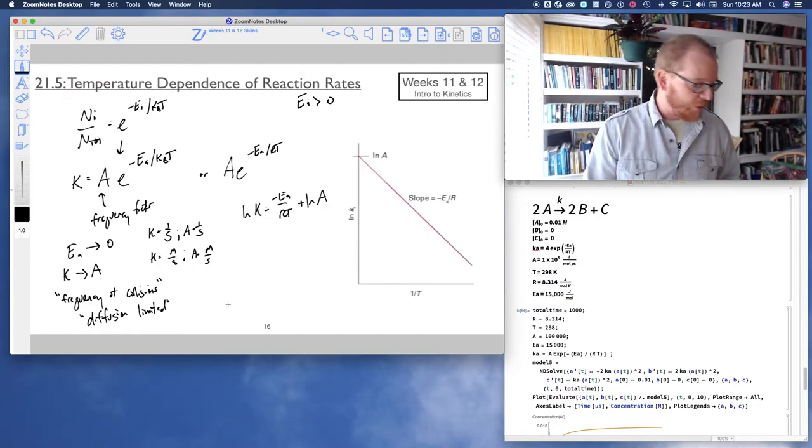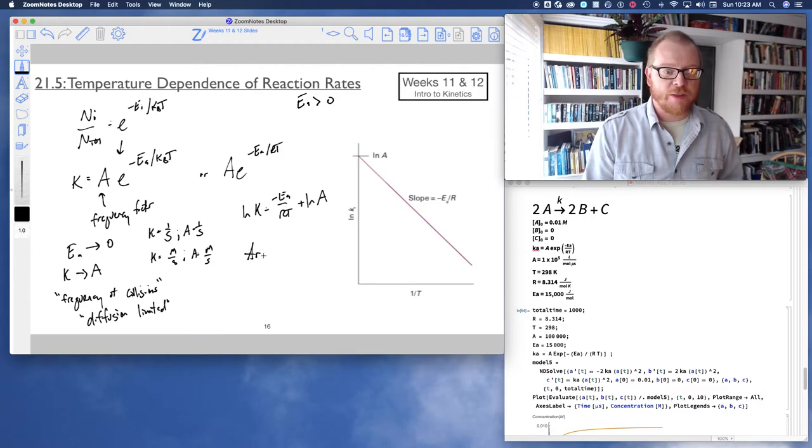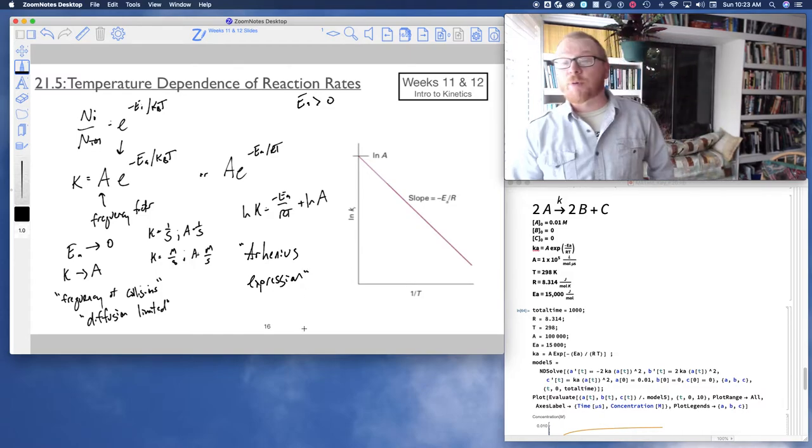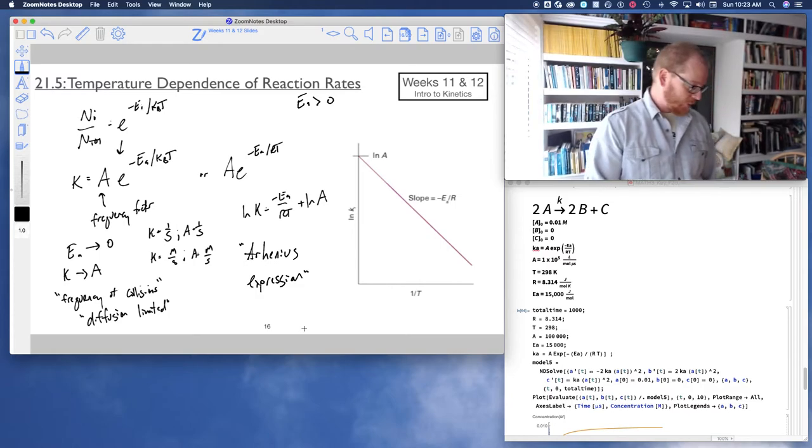Which, by the way, we call this—I didn't say this—we call this the Arrhenius expression or the Arrhenius equation. And believe it or not, Svante Arrhenius was the very first Nobel Prize winner in chemistry for this work.